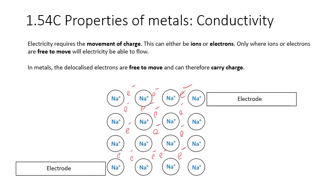So next is electrical conductivity. Now for something to conduct electricity, we require the movement of charge. This can either be ions, so positive or negative ions, or electrons. Only where you have ions or electrons that are free to move, will electricity be able to flow. Now thankfully in metals, we have a delocalized sea of electrons, and they're all free to move, and therefore they can carry charge. So if I apply a current through these electrodes here and here, what will happen is the electrons in the sea of delocalized electrons will be able to move. So they can move through the structure and carry charge, and therefore metals conduct electricity.